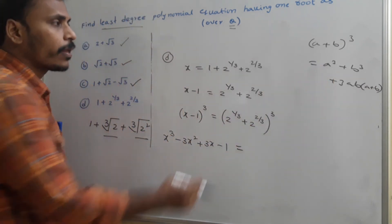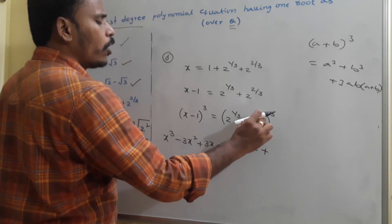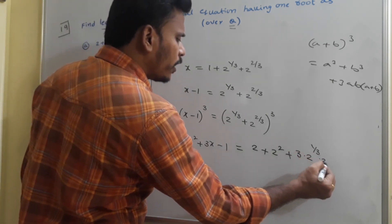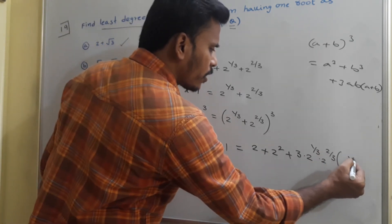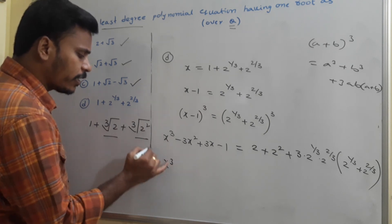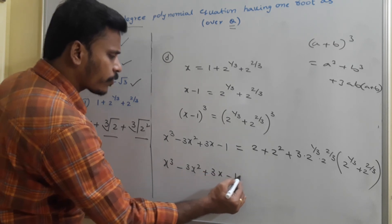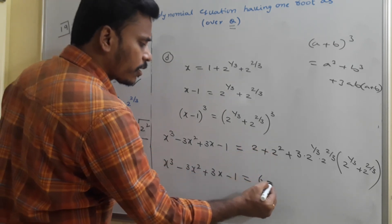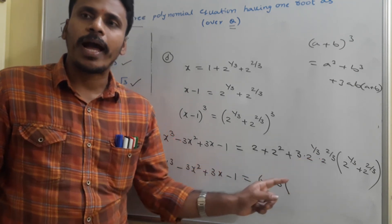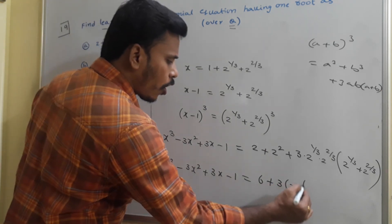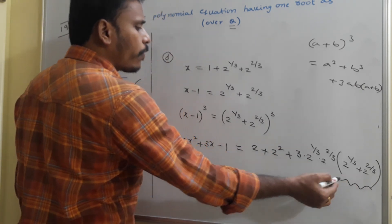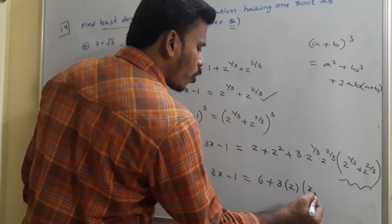On the right side: a cubed is 2^(1/3) cubed equals 2; b cubed is 2^(2/3) cubed equals 4; and 3ab is 3 times 2^(1/3) times 2^(2/3). Since 1/3 plus 2/3 equals 1, that product is 2^1 equals 2, so 3ab equals 6. The factor (a plus b) is 2^(1/3) plus 2^(2/3), which equals x minus 1. So the right side becomes 2 plus 4 plus 6(x minus 1) equals 6 plus 6x minus 6 equals 6x.